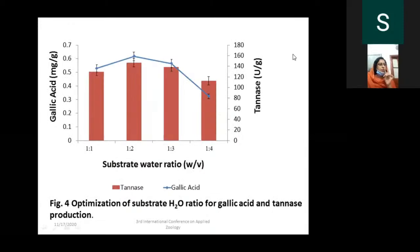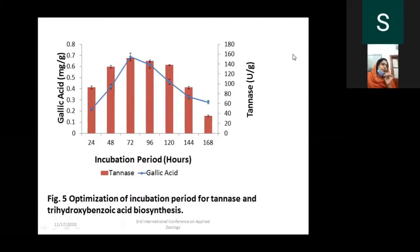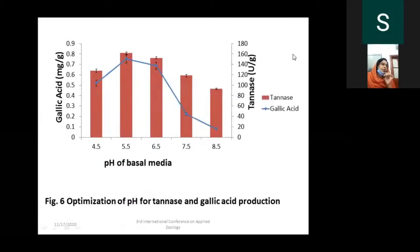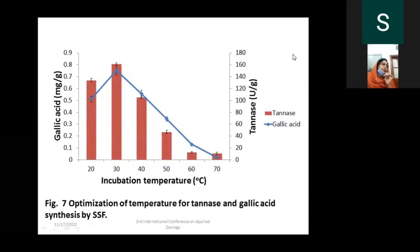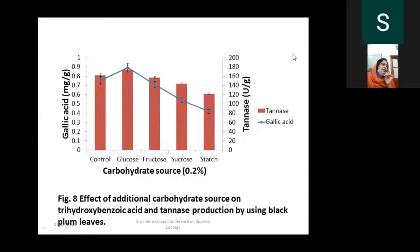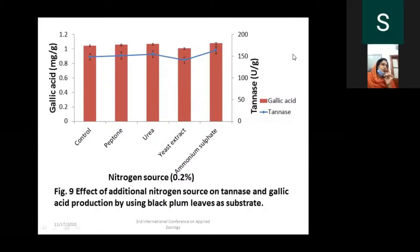Conditions were then optimized for black plum to obtain high yield of gallic acid and tannase. The optimal substrate-to-water ratio was 1:2. Incubation period of 72 hours was optimal. pH of basal media was adjusted to 5.5 as the fungus grows best at that pH. Incubation temperature was 30°C, ideal for the fungus. Among different carbohydrates, glucose at 0.2% gave the highest yield, and ammonium sulfate at 0.2% gave maximum yield among nitrogen sources.